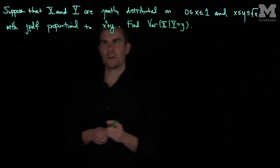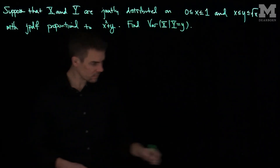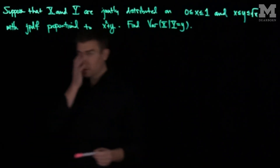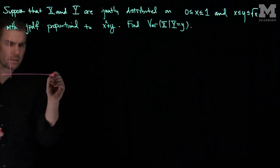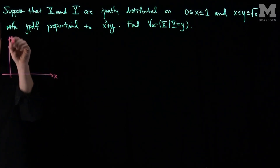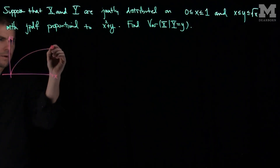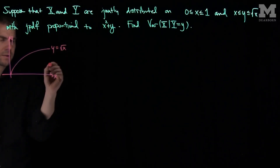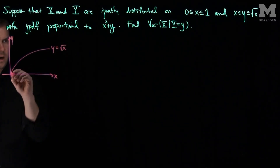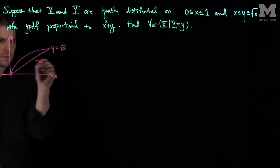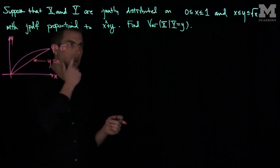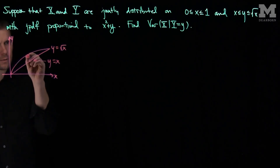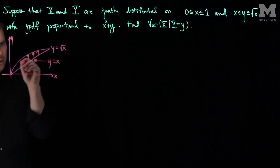So let's sketch our region. Here's the x-axis, here's the y-axis, here is y equals square root of x, and here's y equals x. So y goes between x and root of x, so we're in this region right over here.